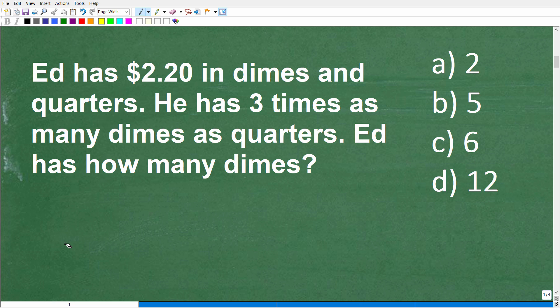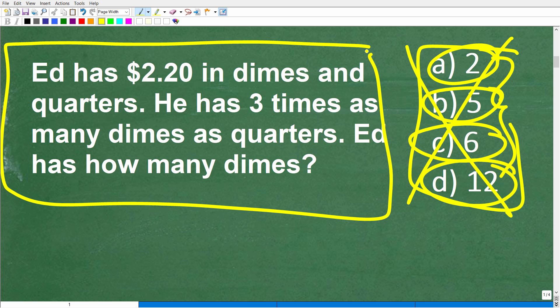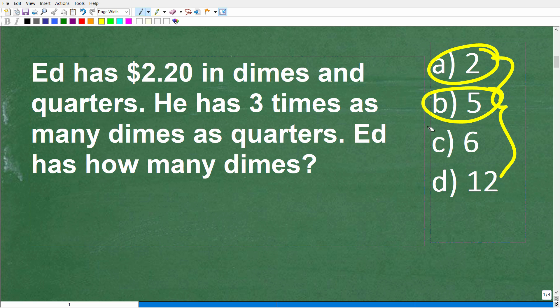In this particular problem, we have a multiple choice question. The question is asking how many dimes does Ed have. If he has two dimes, five dimes, six dimes, or 12 dimes, you could try to reverse engineer this problem to see if you can figure it out. You should use the answers in a multiple choice question if you can't solve it directly. But sometimes it's just easier to use the answers. If this was not a multiple choice question and was just an open-ended question, you have no alternative but to use some math to figure out the right answer.